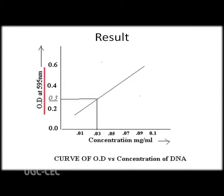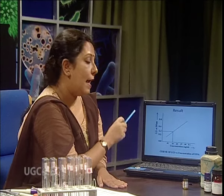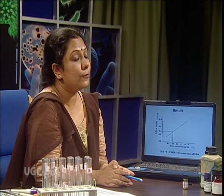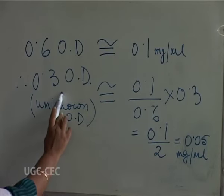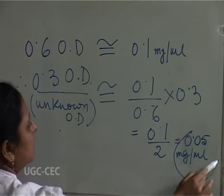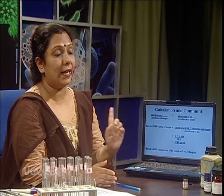The series of standards will construct a straight line. By putting the OD value of the unknown sample on the curve and extrapolating, you can calculate the concentration of the unknown DNA. Having a series of standards is statistically more valid than using a single standard, though the single standard gross method — using the unitary method — is more time-saving. You should prepare the series of standards and construct a standard curve for more accurate determination of the unknown concentration.